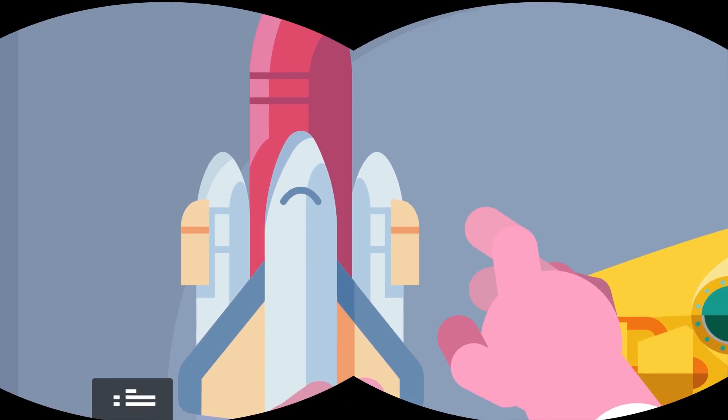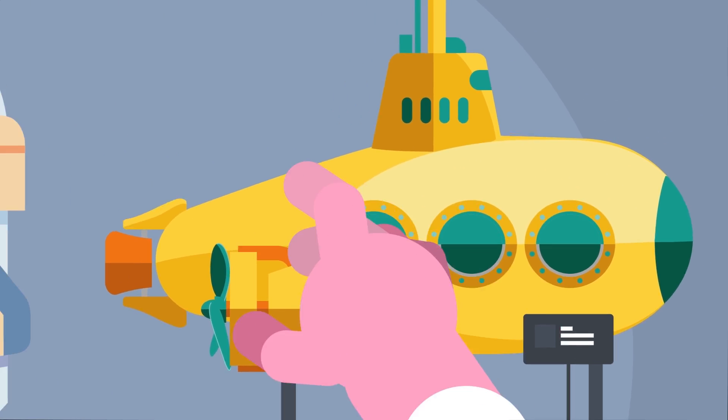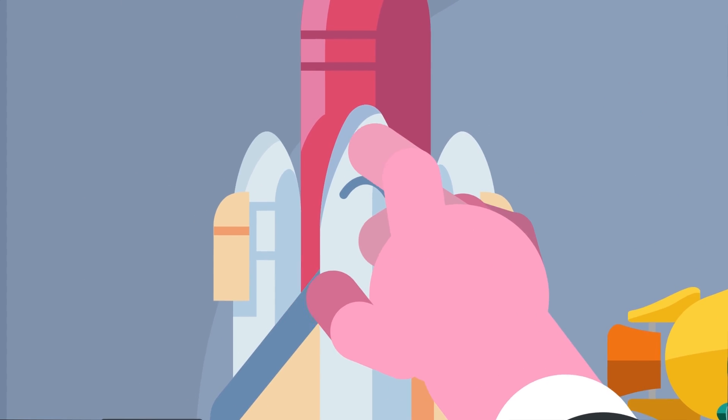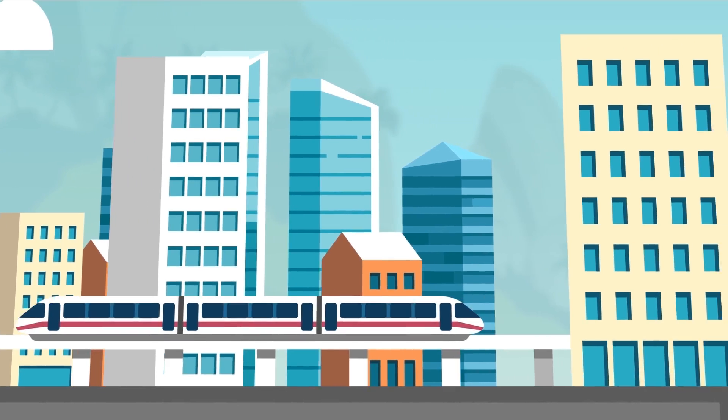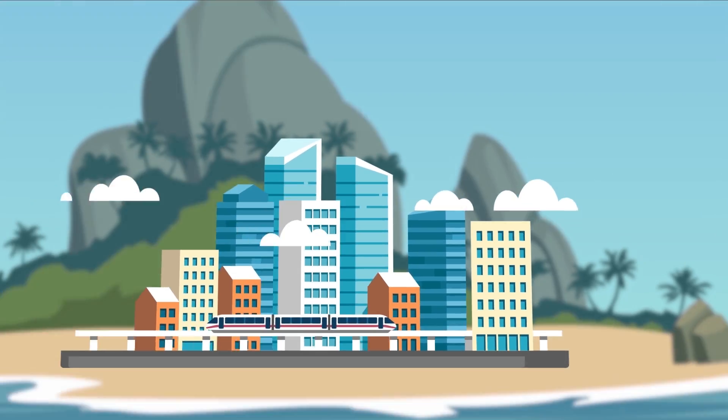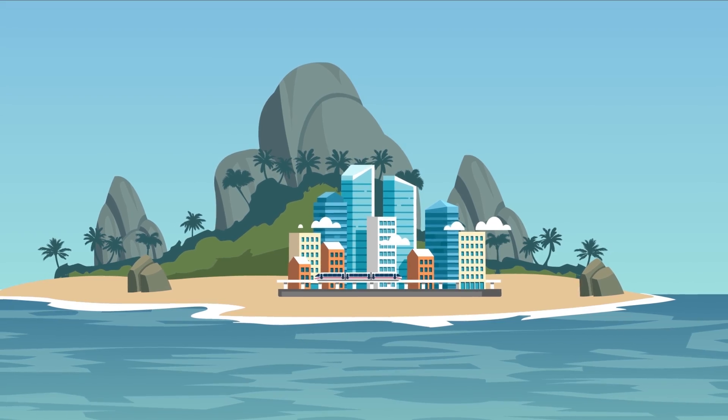In real life, many futurists believe that humanity will be able to move into the oceans far sooner than it will move into the stars. Some architecture firms have even drawn up plans for floating cities, along with underwater metropolises which could be made completely self-sufficient.